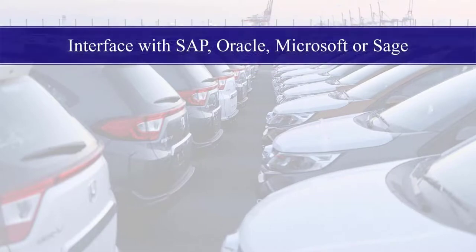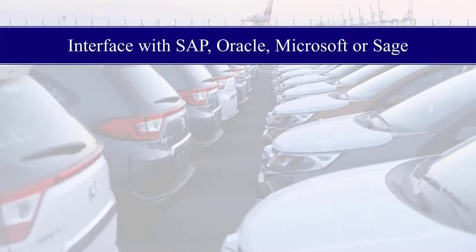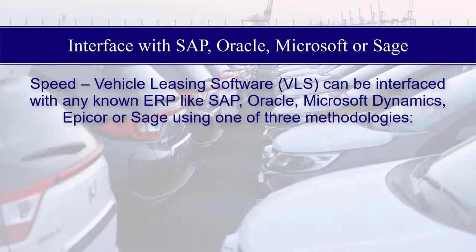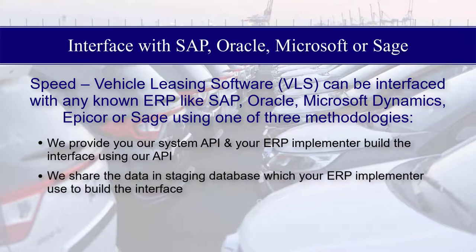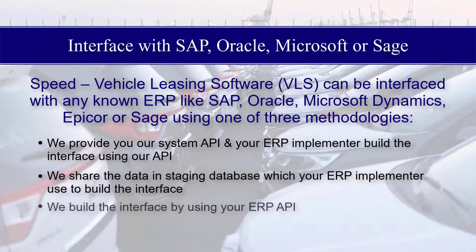Interface with SAP, Oracle, Microsoft, or Sage. Speed Vehicle Leasing Software (VLS) can be interfaced with any known ERP such as SAP, Oracle, Microsoft Dynamics, Epicor, or Sage, using one of three methodologies: First, we provide you our system API and your ERP implementer builds the interface using our API. Second, we share the data in a staging database which your ERP implementer uses to build the interface. Third, we build the interface by using your ERP API.